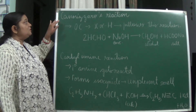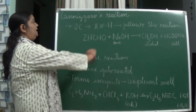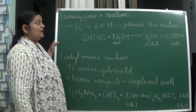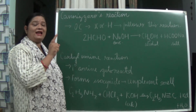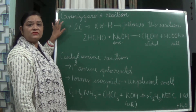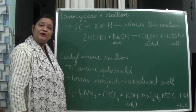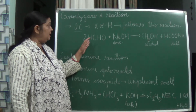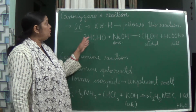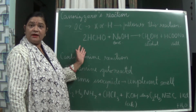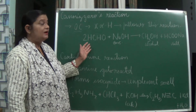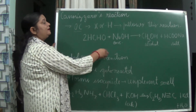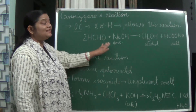Let us start with Cannizzaro's reaction. Here we take an organic compound which does not have any alpha hydrogen. Organic compounds without alpha hydrogen give Cannizzaro's reaction. For example, formaldehyde (HCHO) has no other carbon with an attached hydrogen, so alpha-H is missing, and it will give Cannizzaro's reaction. We react formaldehyde with concentrated NaOH.